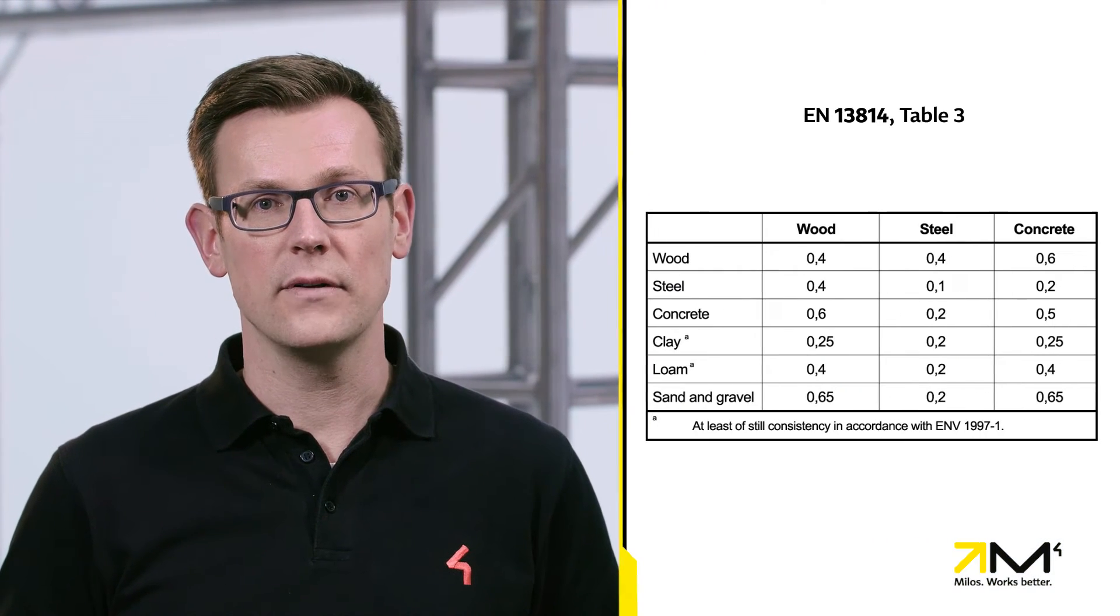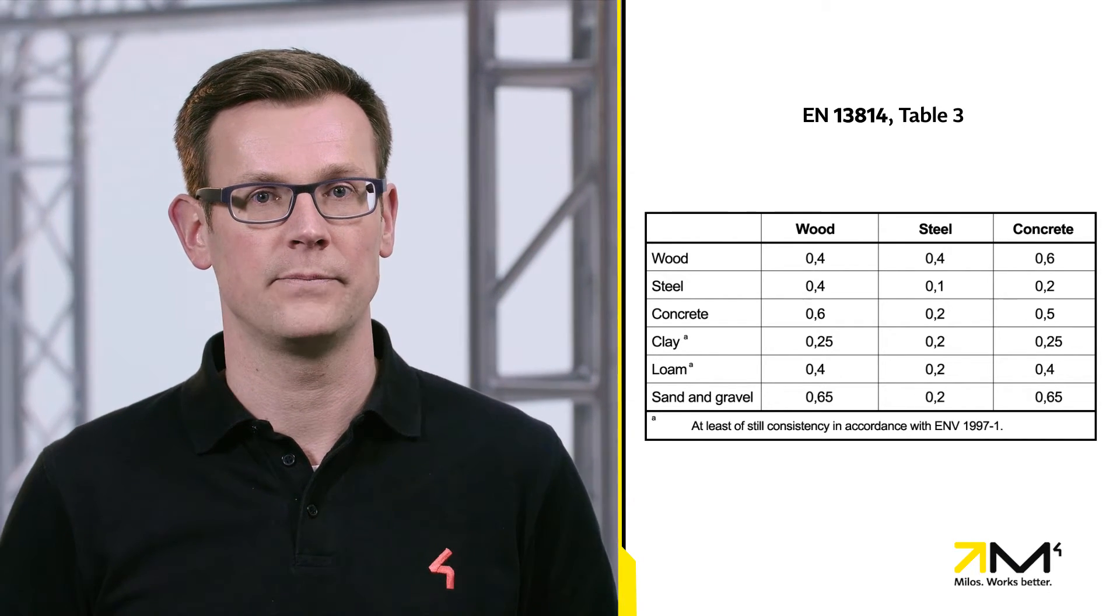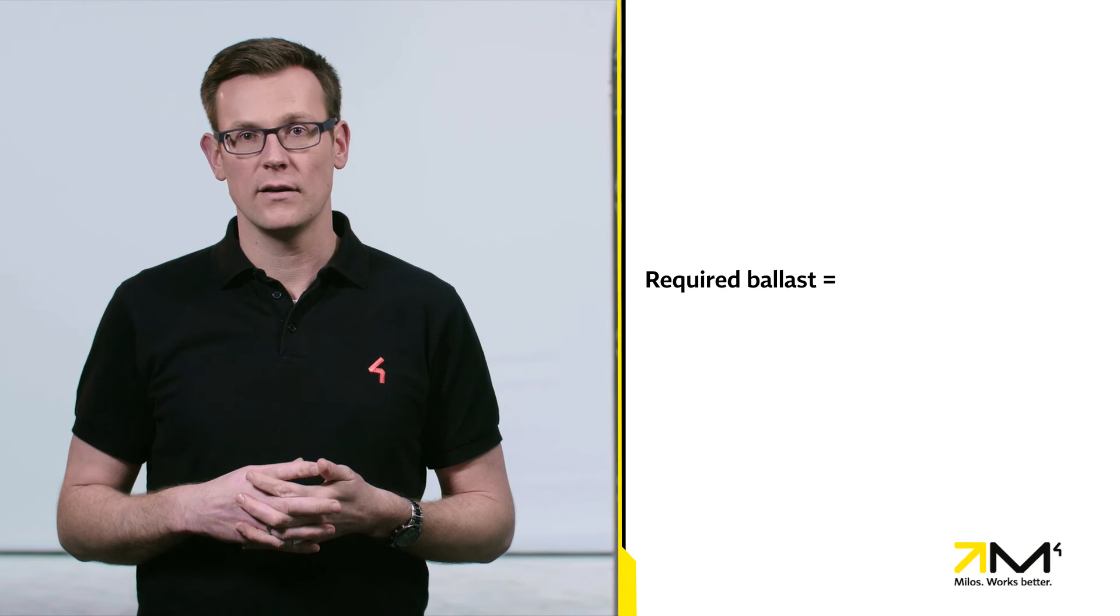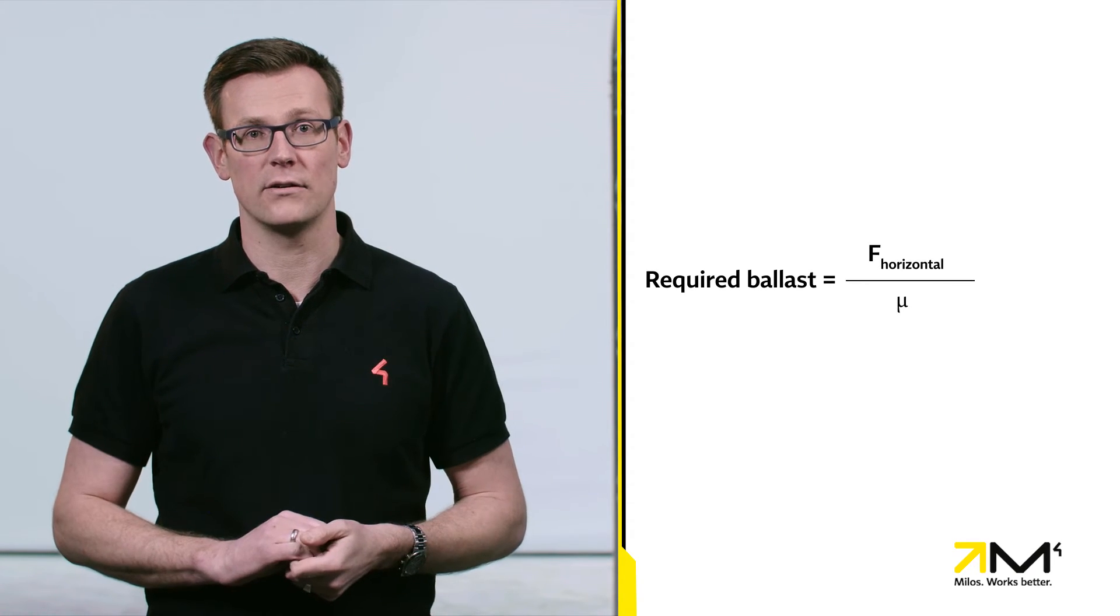The last effect is sliding. The difficulty of sliding two bodies against each other depends on the friction factor between them. Of course, it's easier to slide a concrete block over an icy surface than a rubber mat. Examples of different material combinations are listed in EN 13814. The required ballast is equal to the horizontal load divided by the friction factor.